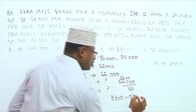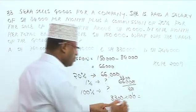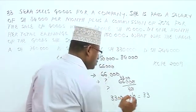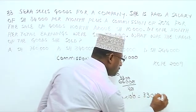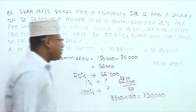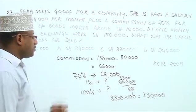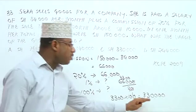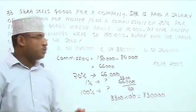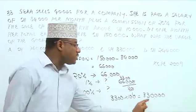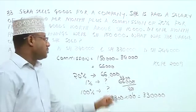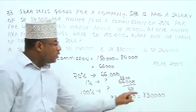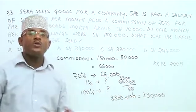So $330,000 represents the sales on which she received the 20% commission. We can verify: 20% of $330,000 equals $66,000, which matches the commission she earned. So these are the sales on which she got commission.